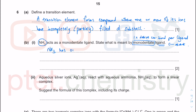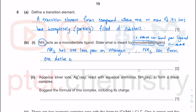NH₃ has one lone pair on the nitrogen. That one lone pair means NH₃ can form one dative covalent bond — also called a coordinate bond, both terms are equally acceptable in the syllabus. This is very important: one dative covalent bond per NH₃ molecule, i.e., per ligand species, which in this case is a molecule but could be an ion.